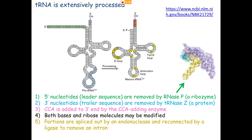In prokaryotes, these three trimming and CCA-addition steps don't happen because the prokaryotic tRNA already has a CCA at its 3' end when newly synthesized. Only eukaryotes trim the 5' end, trim the 3' end, and then put CCA on at the end. The enzyme puts CCA on every single time — no other combination — without any template.